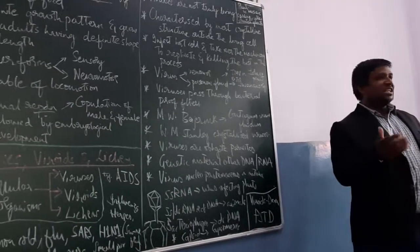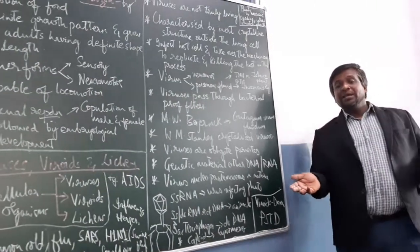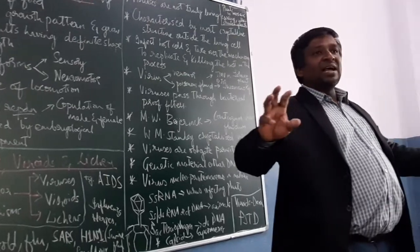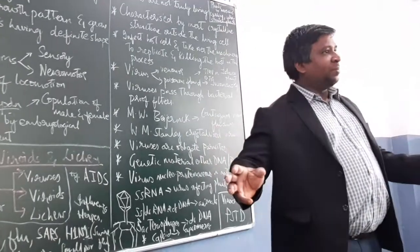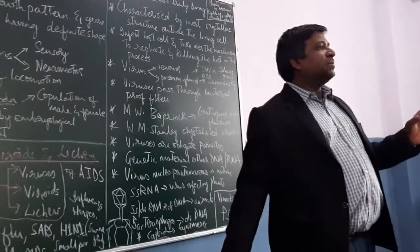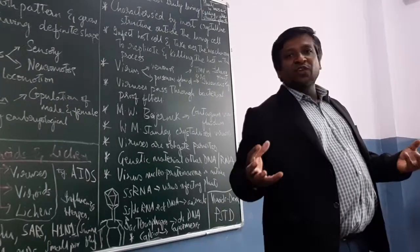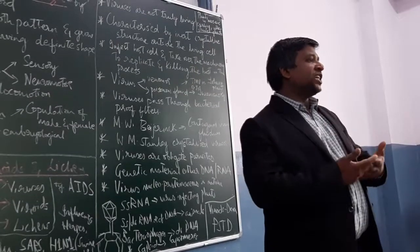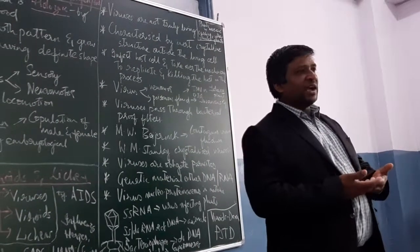Lichens - however you pronounce it - they have an algal part we call phycobiont and a fungal part we call mycobiont. The algal part helps in synthesizing food. The fungal part helps in capturing nitrogen. It's a symbiotic association between algae and fungi.